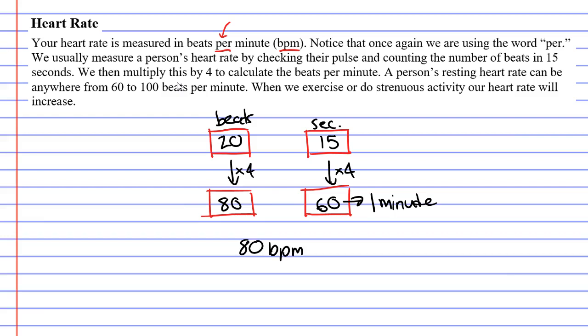Now we need to talk about something referred to as a resting heart rate. A resting heart rate is when you are not doing strenuous activity, such as sitting down or just walking around slowly. A person's resting heart rate can be anywhere from 60 to 100 beats per minute. So the 80 beats per minute we calculated looks like someone's resting heart rate.